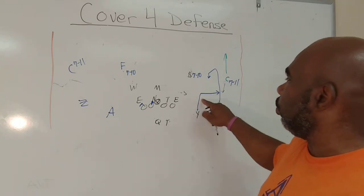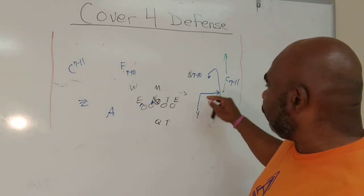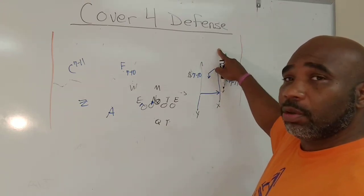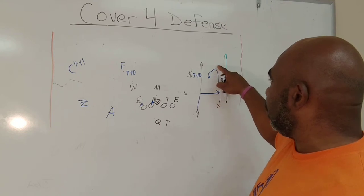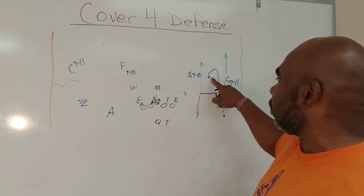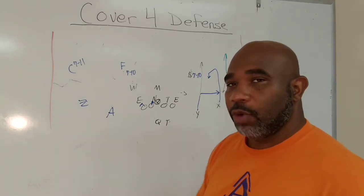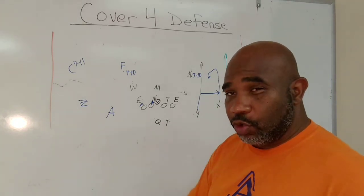So this is two-read. We're reading number two. Now, if this guy, number two, would have gone vertical, then this corner would have stayed vertical. Or he would have run with number one, and then we would have delivered late here. So two-read defense. And again, we're going to do a separate video on two-read.